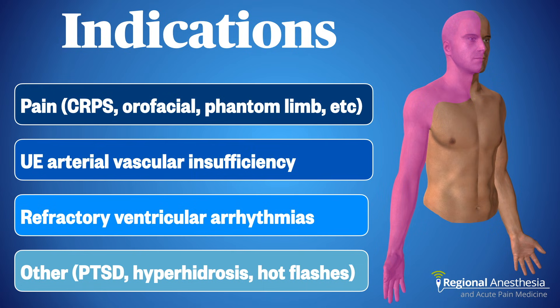A good deal of the sympathetic outflow to the upper extremity, neck, head, and heart passes through the stellate, and that informs our indications. The biggest reason is to diagnose and/or treat a variety of neuropathic pain conditions such as complex regional pain syndrome, acute herpes zoster, post-herpetic neuralgia, nerve injury, orofacial or headache pain, phantom limb pain, refractory angina, or post-mastectomy pain syndrome. Many of these conditions have an element of sympathetically mediated or maintained pain, and blockade of the sympathetic outflow can aid diagnosis and help break that cycle.